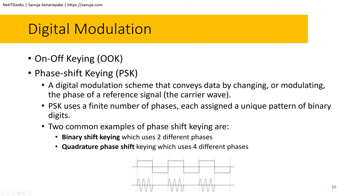On-off keying, also known as OOK, is a modulation scheme that consists of keying a sinusoidal carrier signal with a unipolar binary signal. It is the simplest form of amplitude shift keying. OOK represents digital data as the presence or absence of a carrier wave. If you're interested in how OOK works in more depth, please Google search it — for the purpose of this lecture series we are just covering the surface.